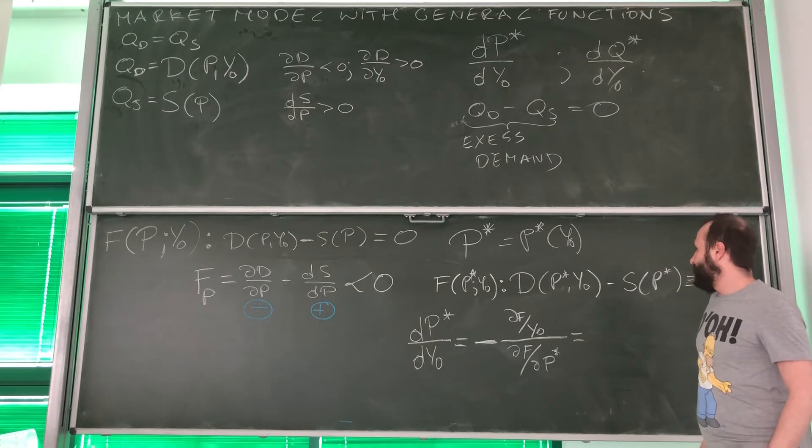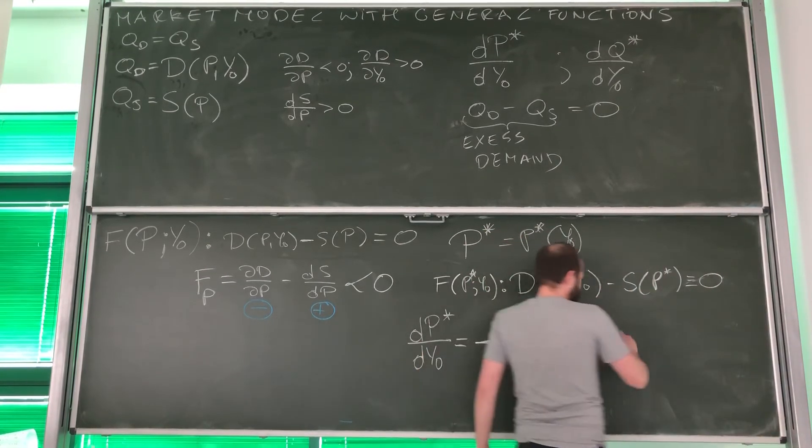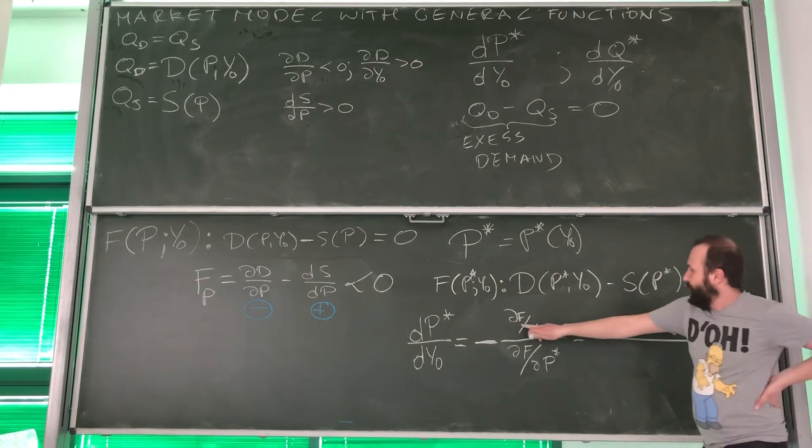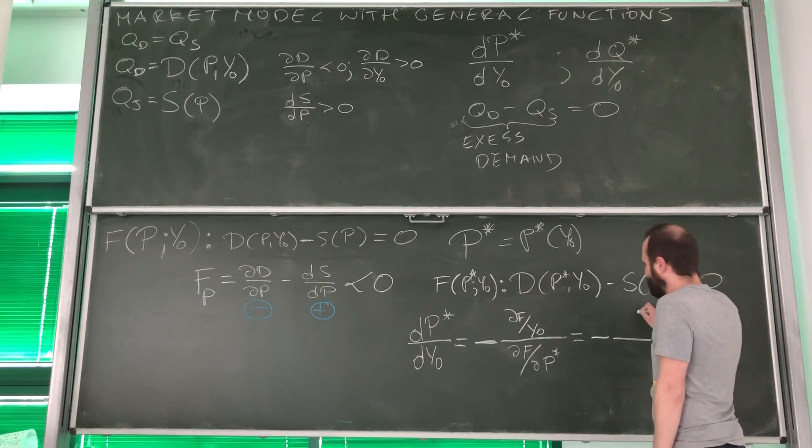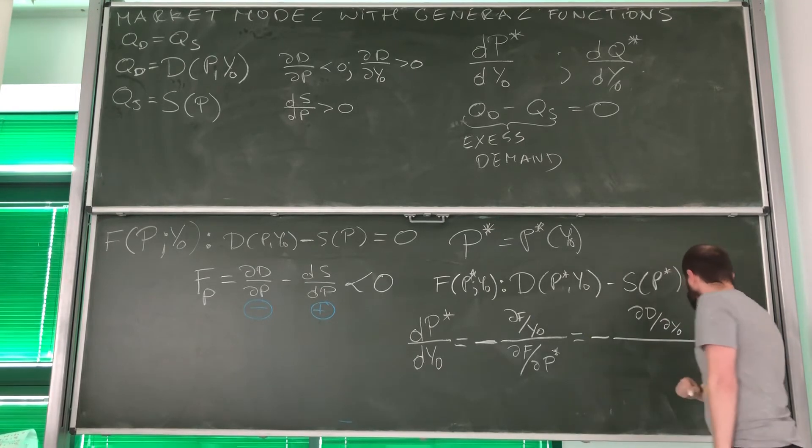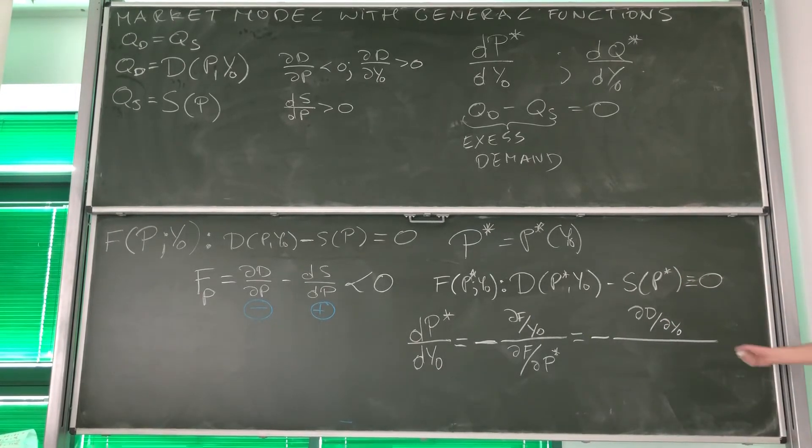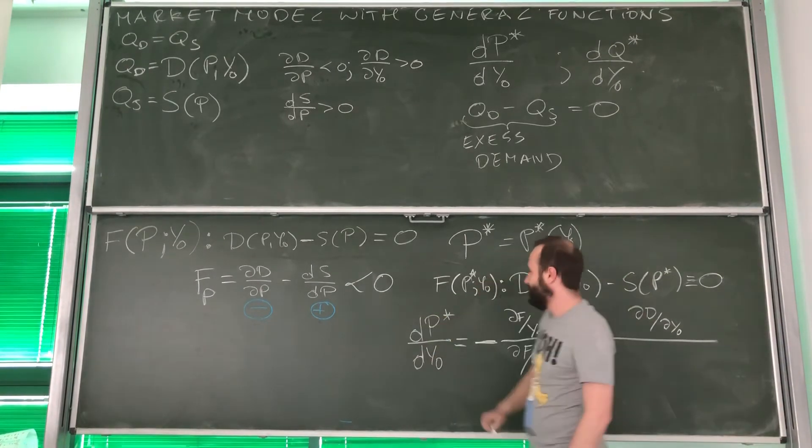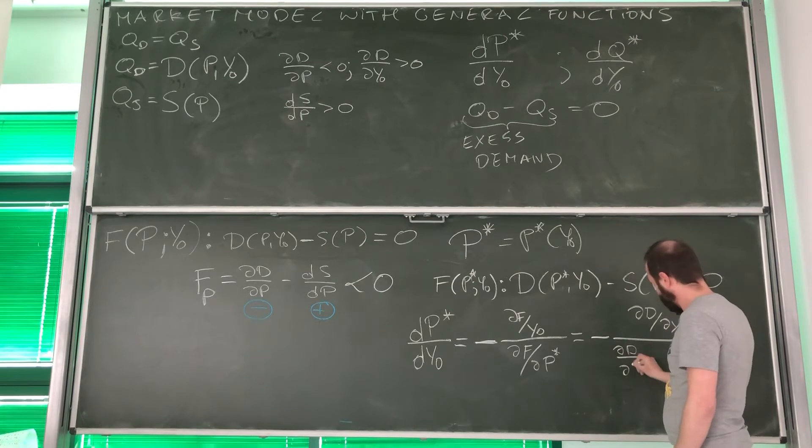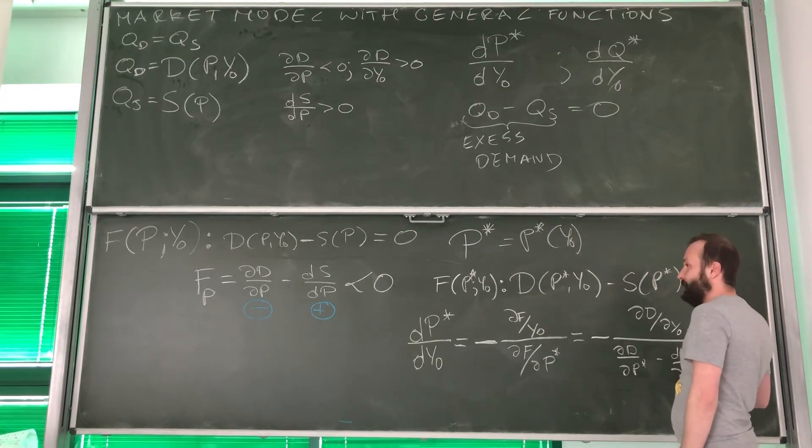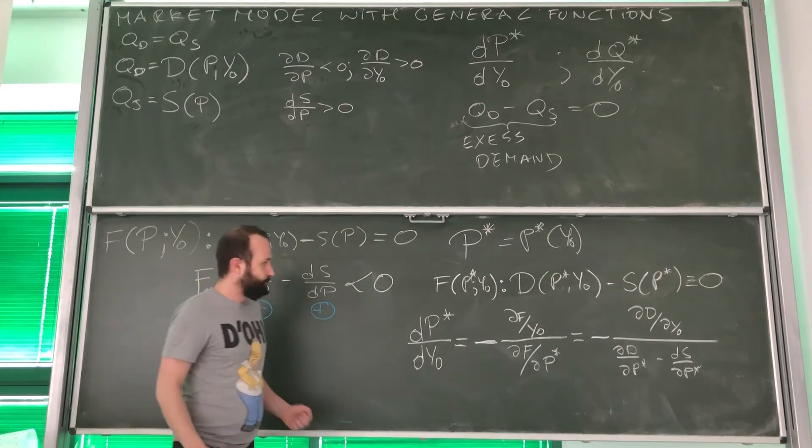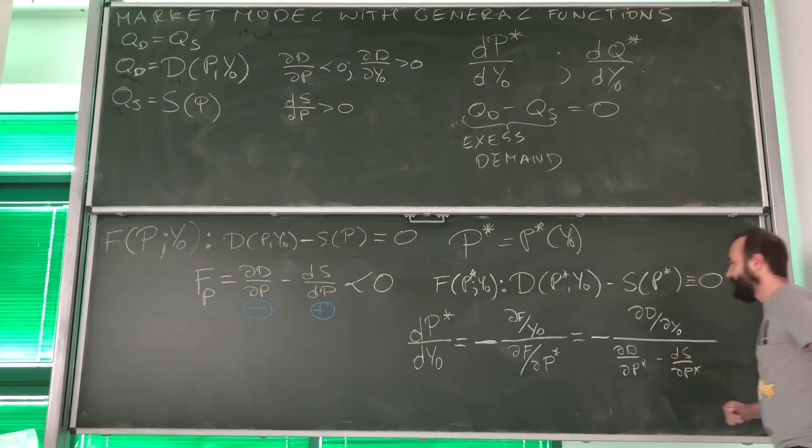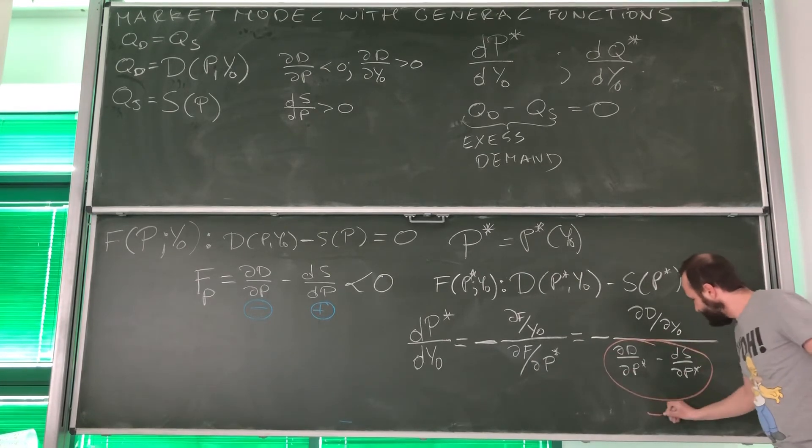And look, calculating it is extremely easy. We've got minus up front, and now the derivative of this function with respect to income. Income is just here. It's simply D_Y0. And this one is the same as the one we have over here. Let me just find it. But we already know that the expression on the bottom is negative.